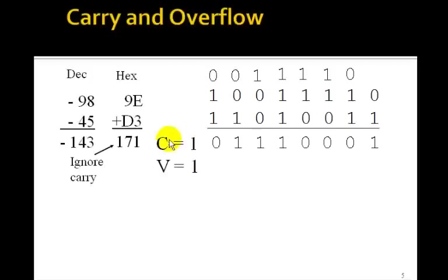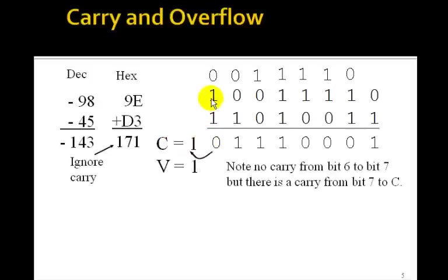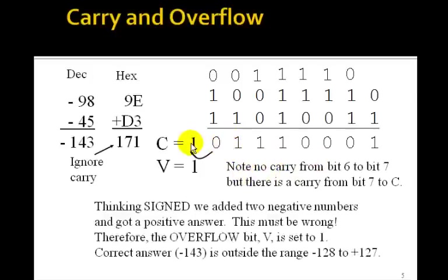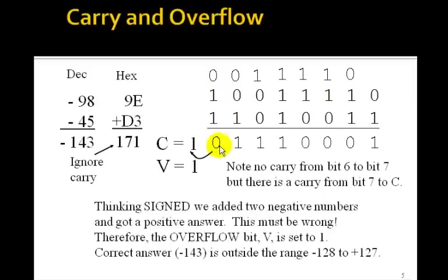Why are both set? The carry bit is set to 1 because adding 9E and D3 as unsigned numbers gives a result over 255. Thinking signed, there was no carry from bit 6 to bit 7, but there was a carry from bit 7 into the carry. We added two negative numbers and got a positive number — that must be wrong. So the overflow bit is set to 1. The correct answer, negative 143, is outside the range minus 128 to plus 127. Any time you have no carry from bit 6 to 7 but a carry from bit 7 to the carry, the overflow bit will always be set to 1.